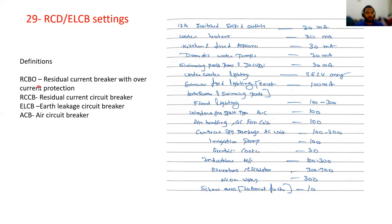A few definitions: RCBO means residual current breaker with overcurrent protection. RCCB is residual current circuit breaker. ELCB is earth leakage circuit breaker. ACB means air circuit breaker.